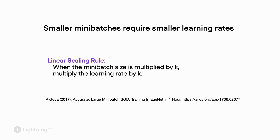Due to this, in regular data parallel (not the distributed version), we have to keep in mind the linear scaling rule. Since each GPU has a smaller micro-batch and we use averaged gradients — effectively equivalent to smaller batch sizes — we have to modify the learning rate accordingly. In the next video we will talk about distributed data parallel, which is the recommended strategy in practice.